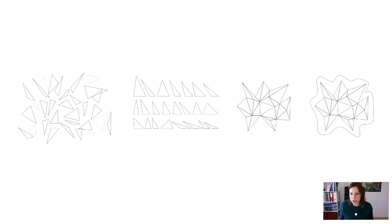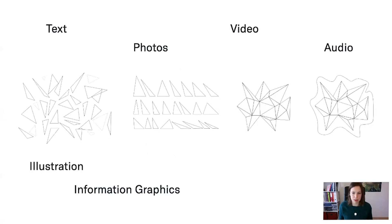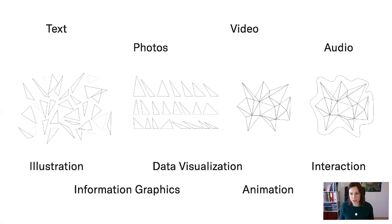Traditionally, journalism uses text and photos to do so. Relatively recently, video and audio joined the arsenal of journalistic communication tools. And increasingly, illustration, information graphics, data viz, and animation and interaction are part of this collection of media that can be drawn upon to tell a story.